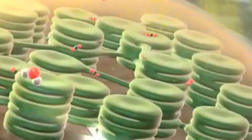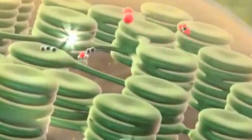Chloroplasts use energy from light to transform carbon dioxide and water into sugar and oxygen.